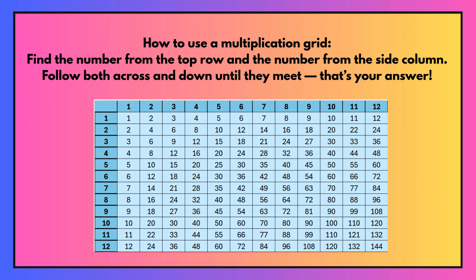So with a times table you'll have two numbers. Find the first number from the top row and the second number from the side column. Follow them both across and down until they meet and that will be your answer. I'm going to show you some examples.